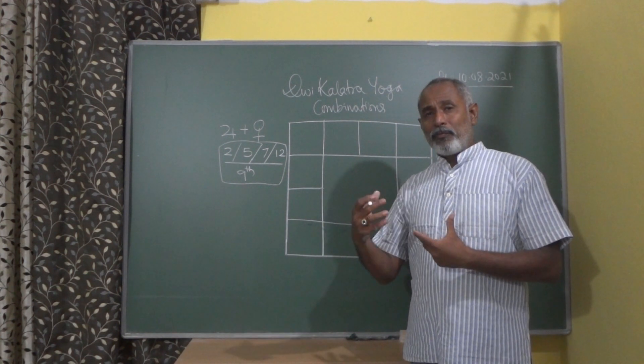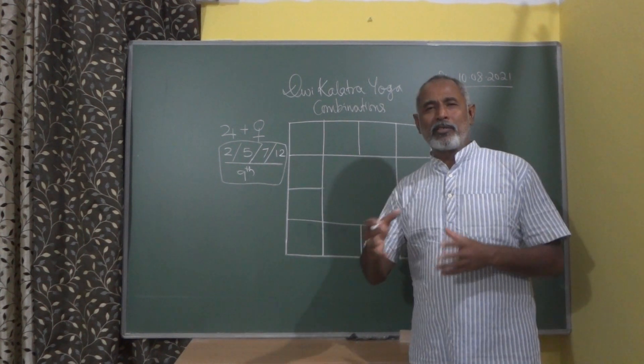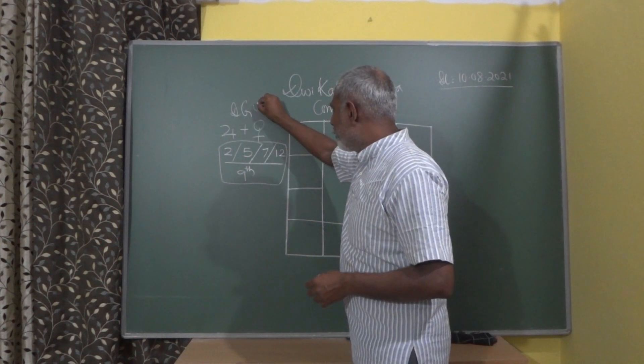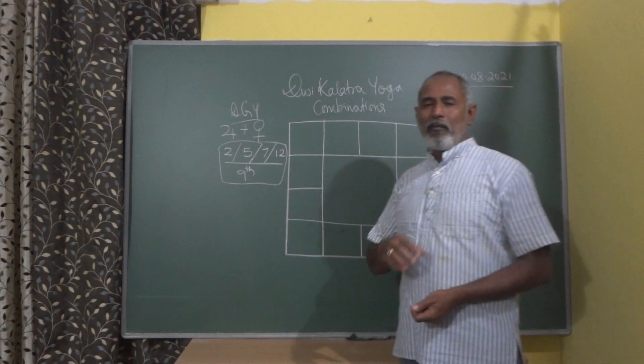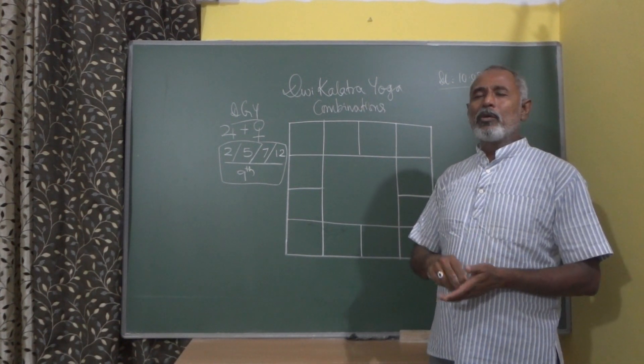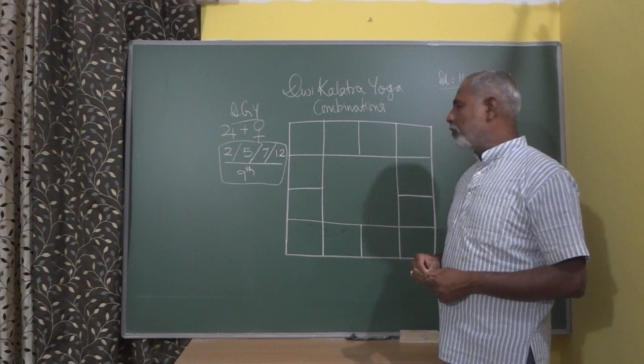then there is a chance that the 7th house becomes weaker than the 9th house. And if the combination of these planetary combinations are there in the chart, it is also known as the Dvi Guru Yoga,